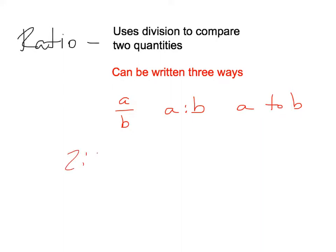So you could have 2 to 3, which would be the same as saying 2 over 3, or 2 colon 3.